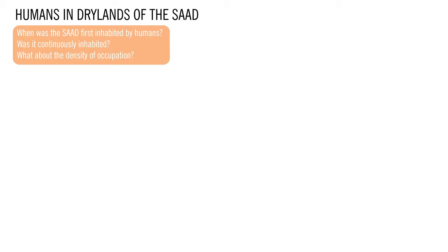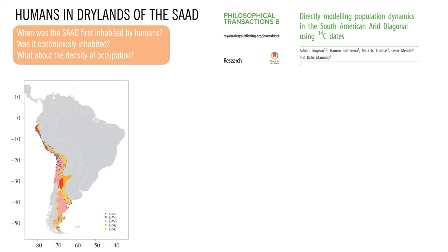But when was the South American Arid Diagonal first inhabited by humans? Was it continuously inhabited, and what about the density of occupation? In the last few years, different papers have focused on answering these questions by compiling local and regional datasets. Last year, a paper led by Adrian Timson reported the most updated C-14 archaeological dataset from the South American Arid Diagonal, as you can see here in the map, in order to model the population dynamics.